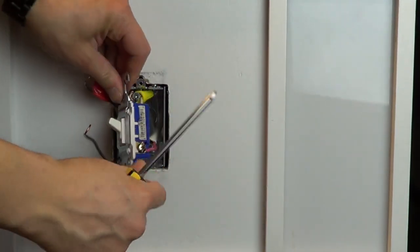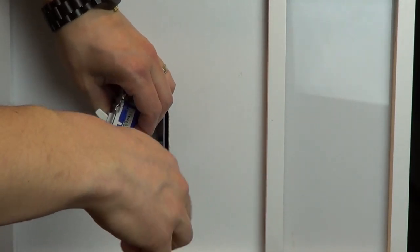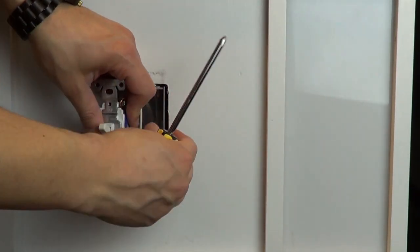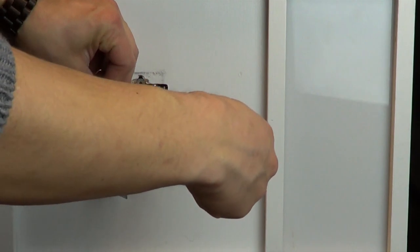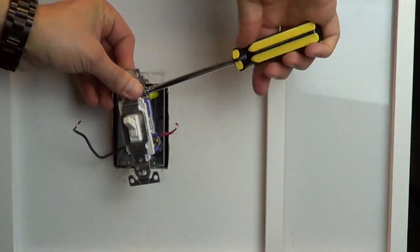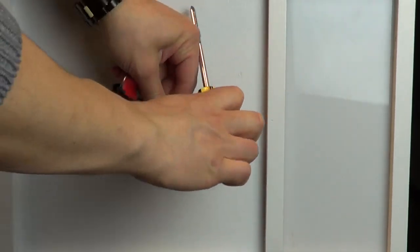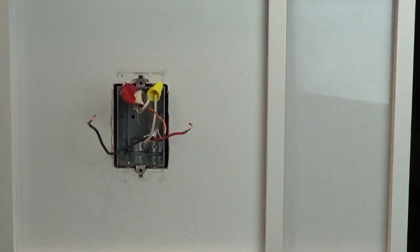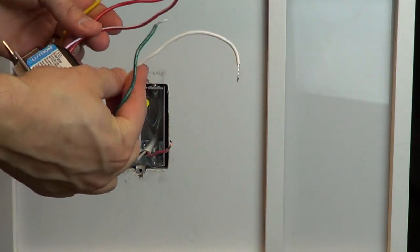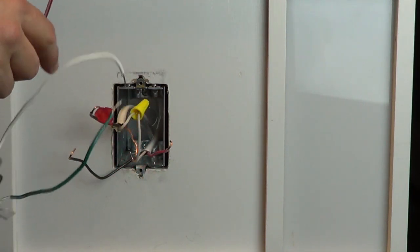Now you can remove the existing switch. In this video, we're using a Diva reverse phase dimmer, however these instructions apply to other products that have the same color wires.